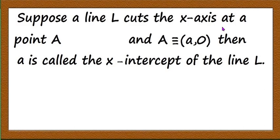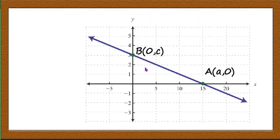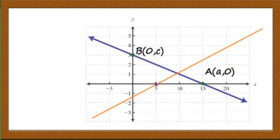Similarly, suppose a line L cuts the x-axis at a point A with coordinate (a, 0). Then a is called the x-intercept of the line L. The x-intercept of a line is the x-coordinate of the point where the line meets the x-axis. For one line the x-intercept is 15, for another it is 5 because the coordinate of that point is (5, 0). The x-intercept of another line is minus 5 because the coordinate of that point is (-5, 0).